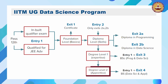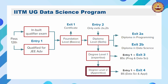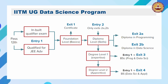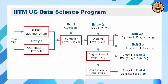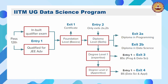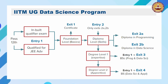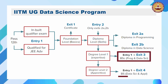Then you have degree level 2, which includes a possible apprenticeship where you can go to an industry setting and gain hands-on knowledge as well. At the end of degree level 2, you can get a B.S. Data Science and Applications degree. So notice that there are two degree levels: a BSc Programming and Data Science, and a B.S. Data Science and Applications.